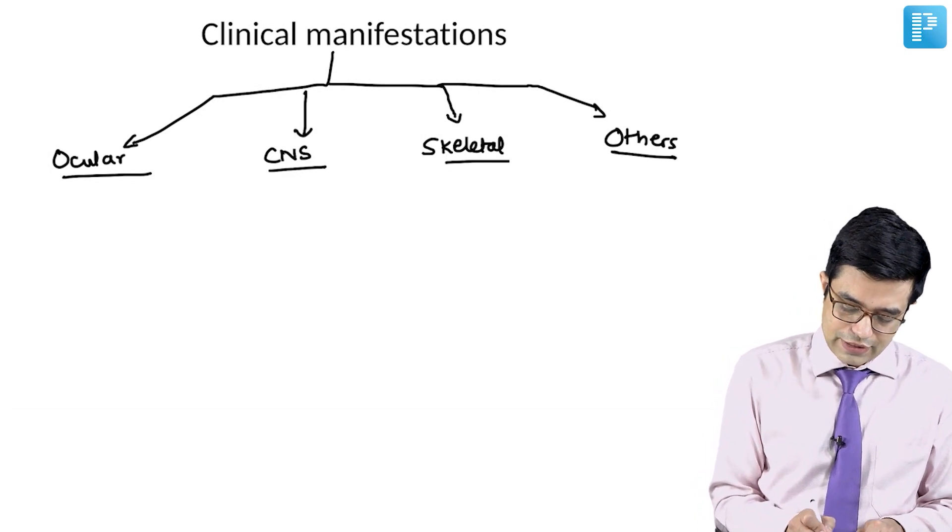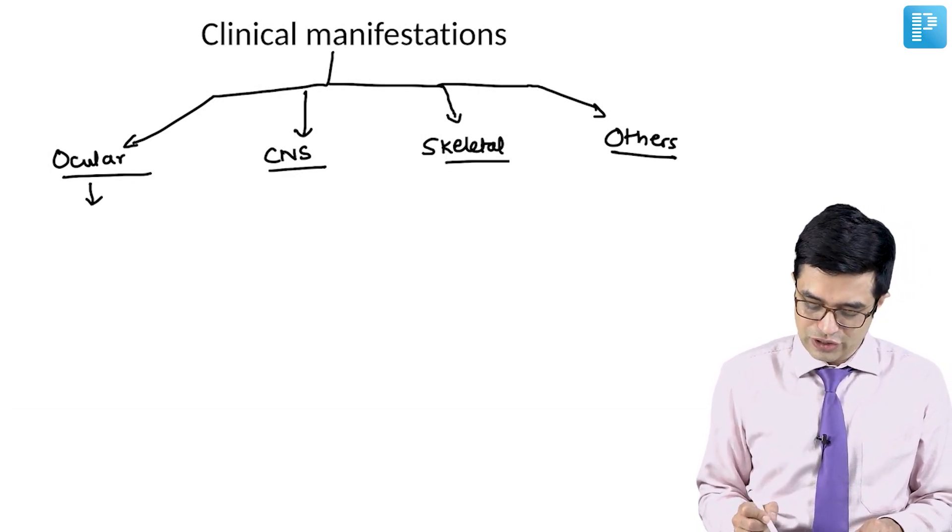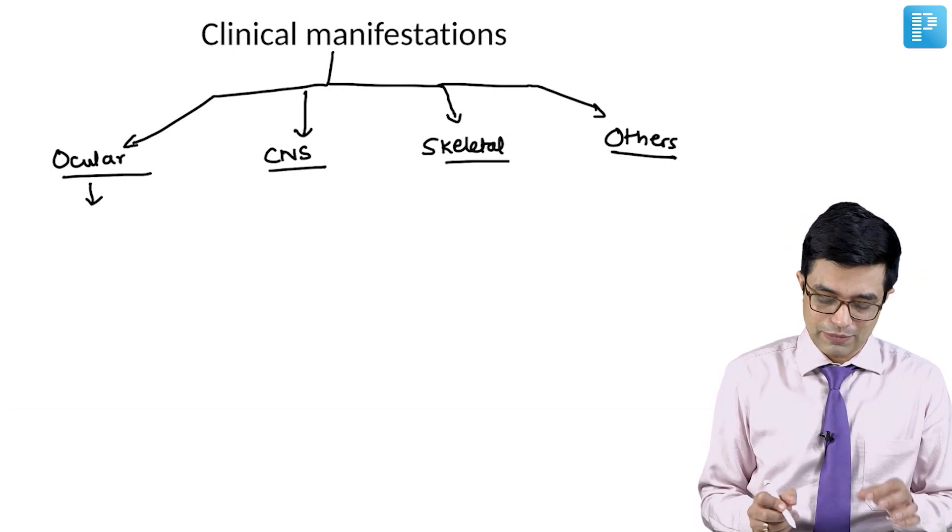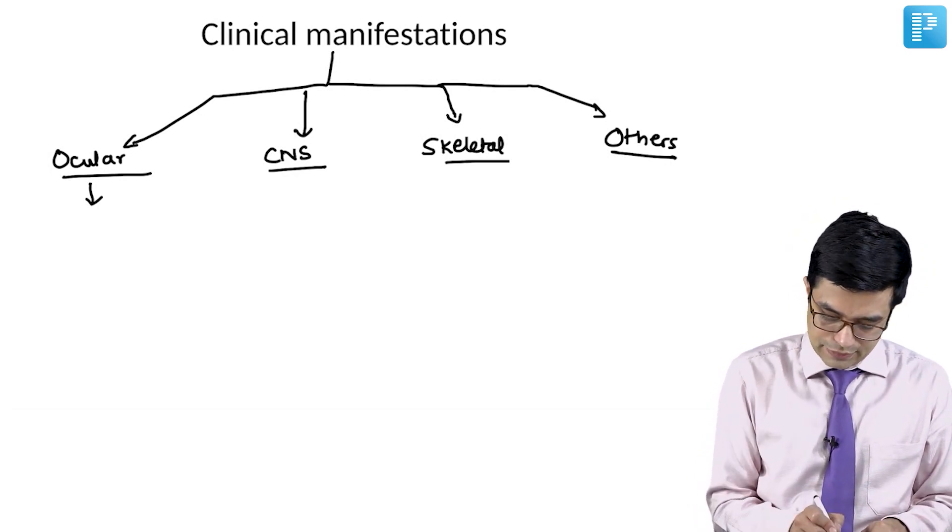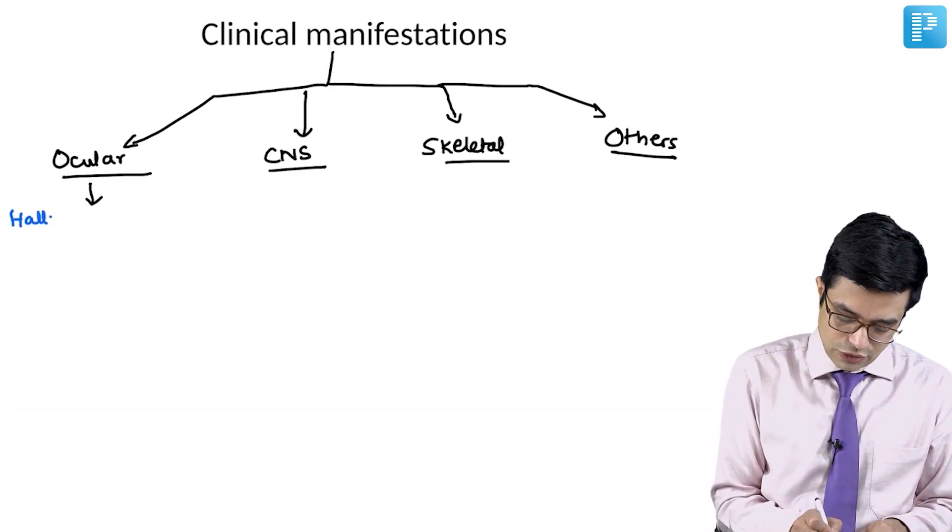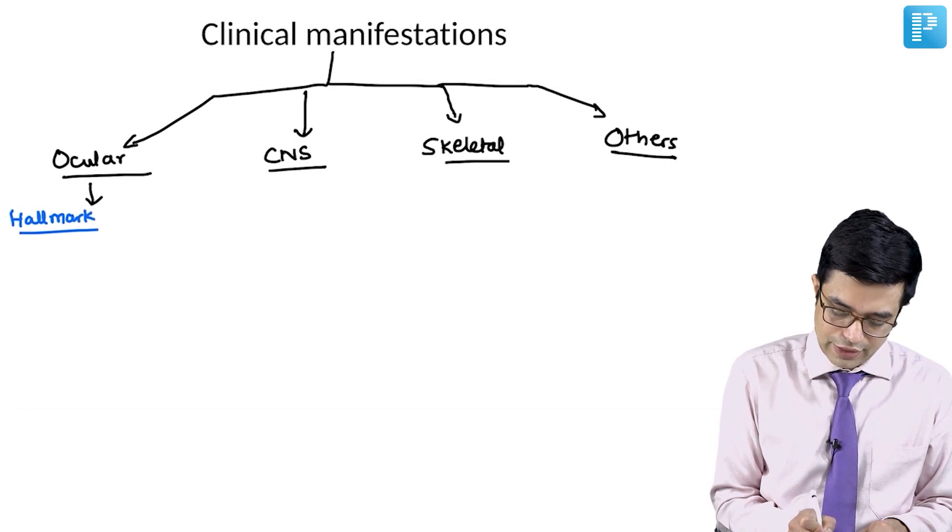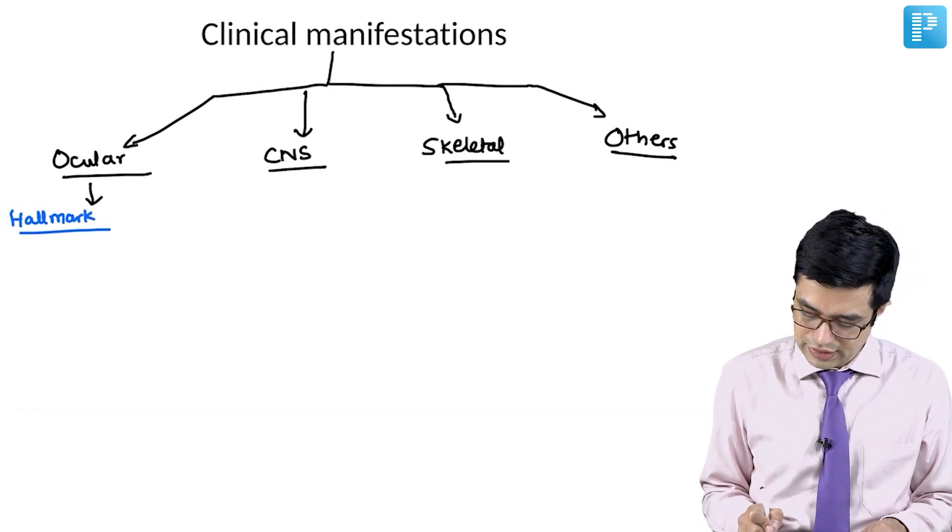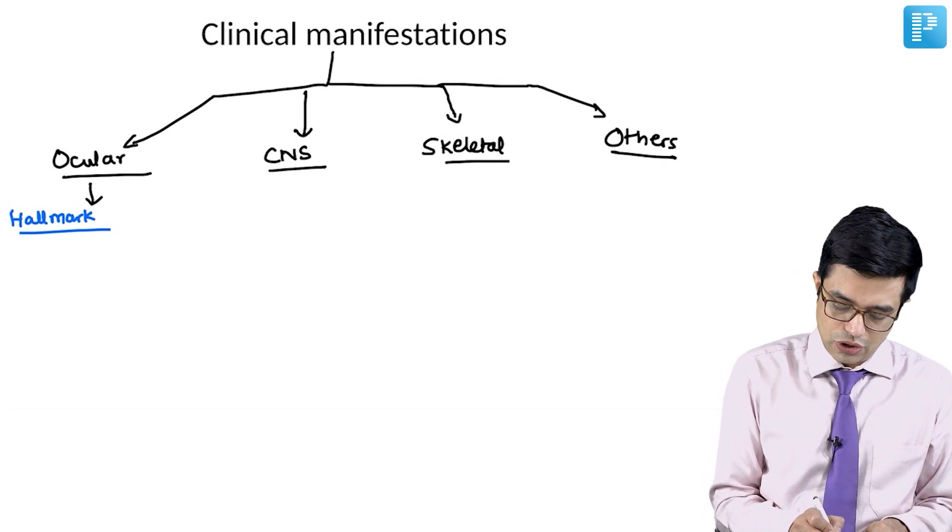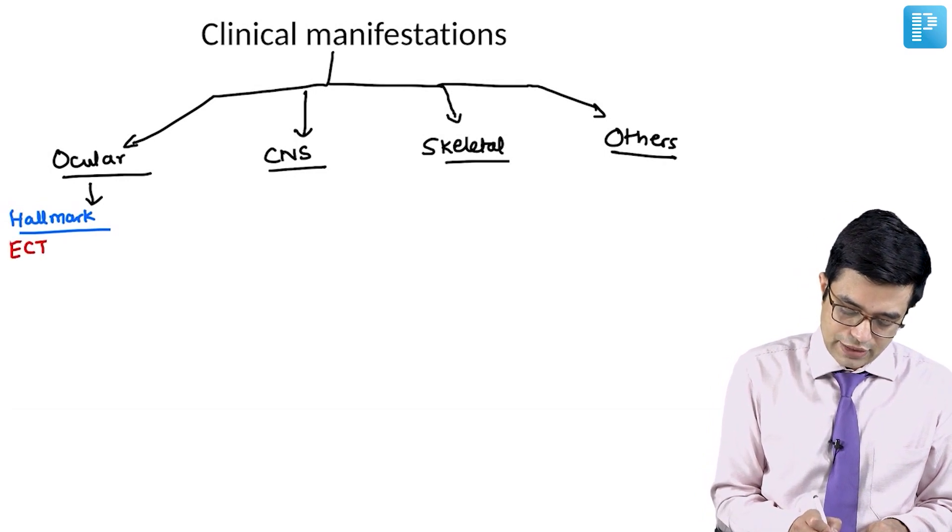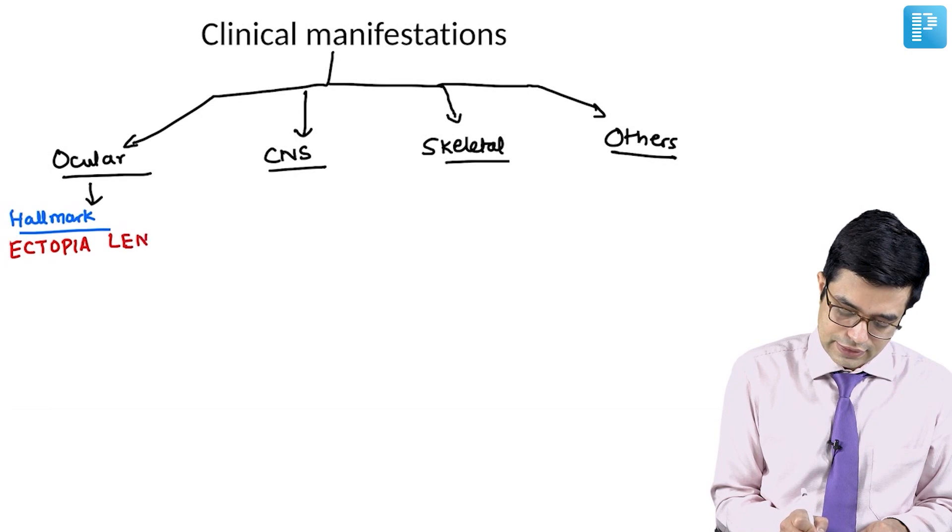Ocular manifestations are the initial presentation, the hallmark presentation and the most common manifestation which is also called the hallmark finding of homocystinuria is a condition called ectopia lentis. There is subluxation of the lens of the eye.